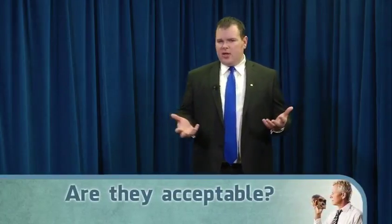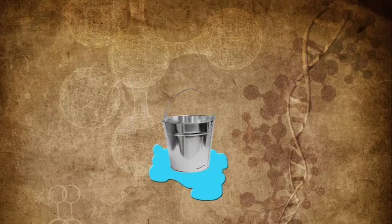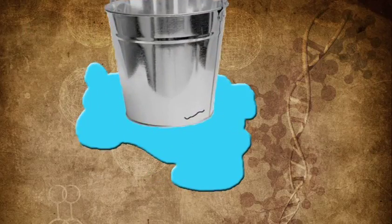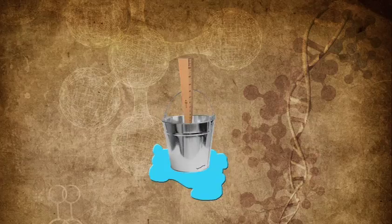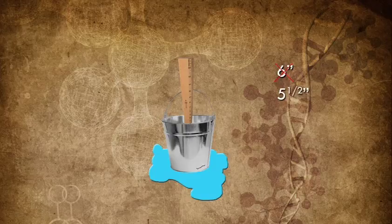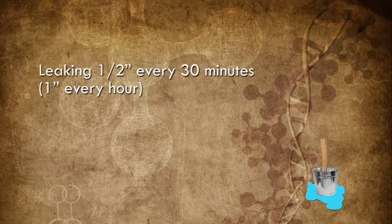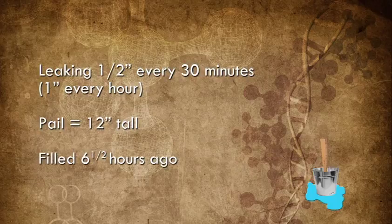Let's think about whether these assumptions are acceptable. Imagine you're walking down the sidewalk and in front of you is a pail of water that's halfway filled. You notice water all around the base and a small crack causing a slow leak. You decide to do a science experiment to determine when this pail was initially filled with water and how long it'll take to empty. You measure six inches of water, then thirty minutes later measure again — now it's five and a half inches. So you calculate the pail is leaking a half inch every thirty minutes, or one inch every hour. The pail is twelve inches tall, so you determine it must have been filled six and a half hours ago and will be empty in another five and a half hours.